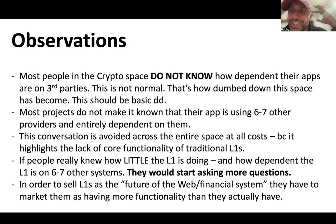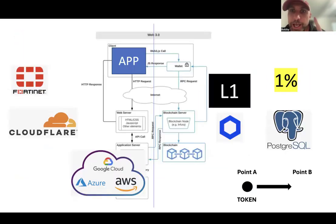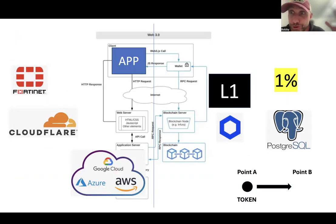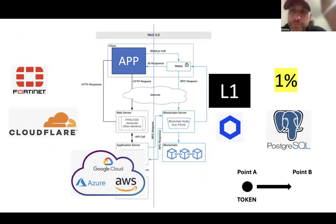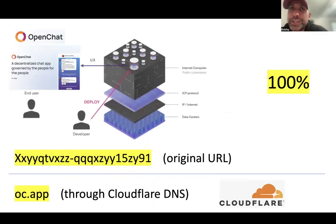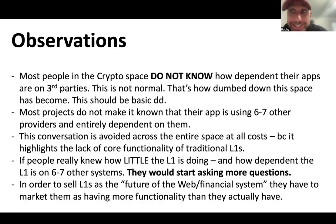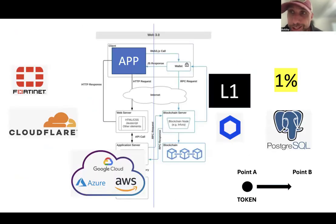That's not normal. That's how dumbed down this entire industry has become, because that should be basic due diligence. They have avoided this conversation like the plague because they're trying to paint these layer ones as the end-all be-all solution to the future of Web3, when nothing could be further from the truth. So little is happening on the layer one — 99-plus percent of everything is happening off chain. The user experience is being delivered off chain. Most projects do not make it known that their app is using six or seven other different providers and is entirely dependent on them. ICP is a new model entirely, and this is really how the entire world of software works.